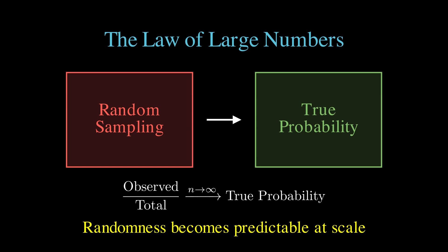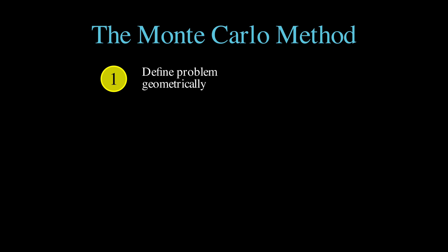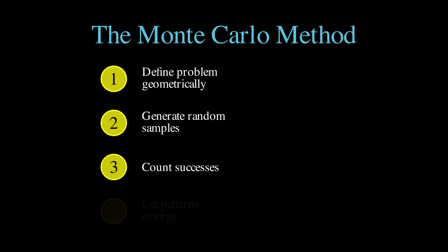And this principle doesn't just work for calculating pi, it works for solving an enormous range of problems that would otherwise be mathematically intractable. The real beauty of Monte Carlo is its simplicity. You take a complex problem, find a way to represent it with random sampling, generate lots of random samples, count your successes, and then let the patterns emerge naturally.